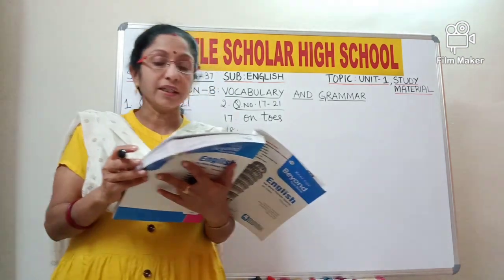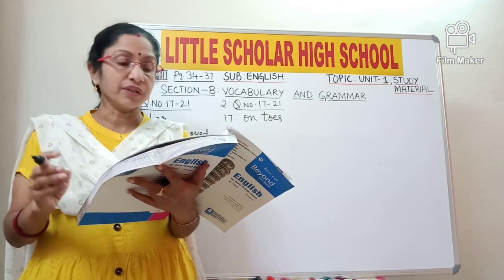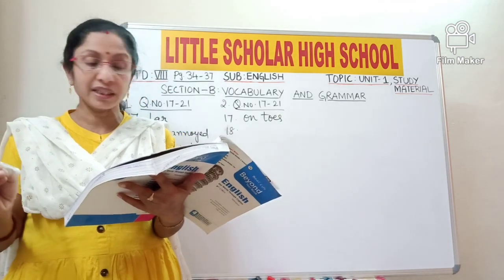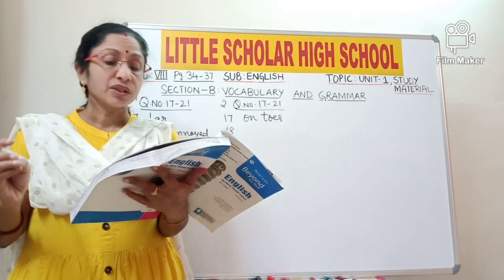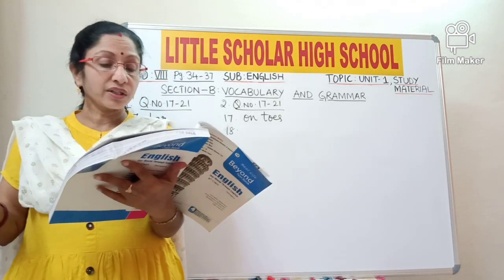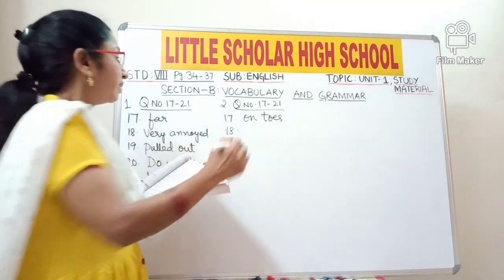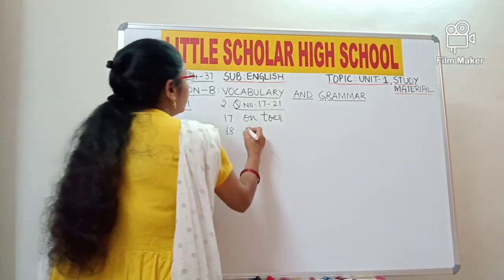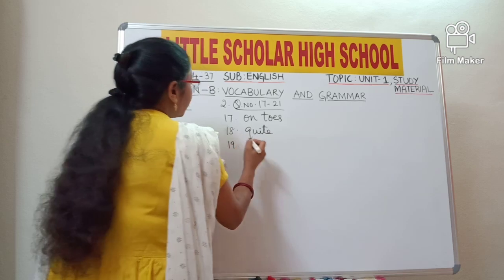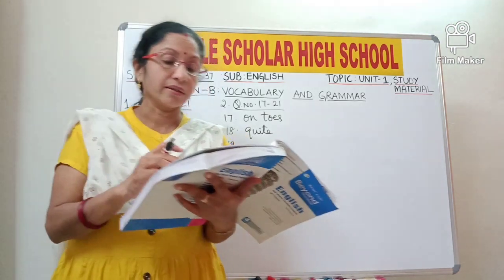Question number 18: 'And there are toes quiet often.' Q-U-I-E-T, 'quiet', means to be silent or calm. But here we are talking about frequency. So it should be Q-U-I-T-E, 'quite', which means 'very often'. So Q-U-I-E-T 'quiet' should be replaced with Q-U-I-T-E 'quite'.